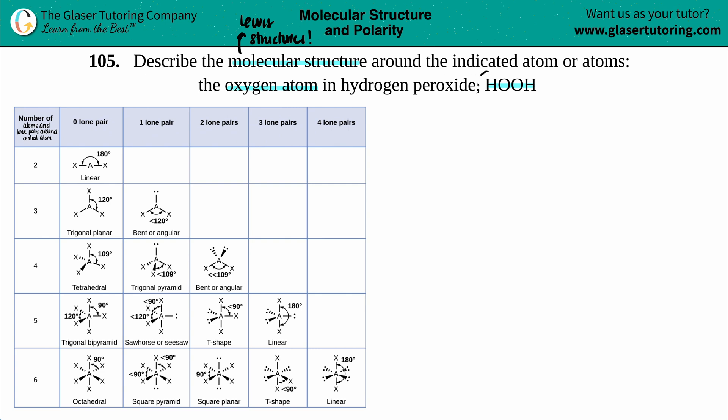Now here, the way that they drew it, HOOH, it seems like we're drawing the Lewis structure from left to right. The backbone is a hydrogen that's next to an oxygen, that's next to another oxygen, that's next to a hydrogen.